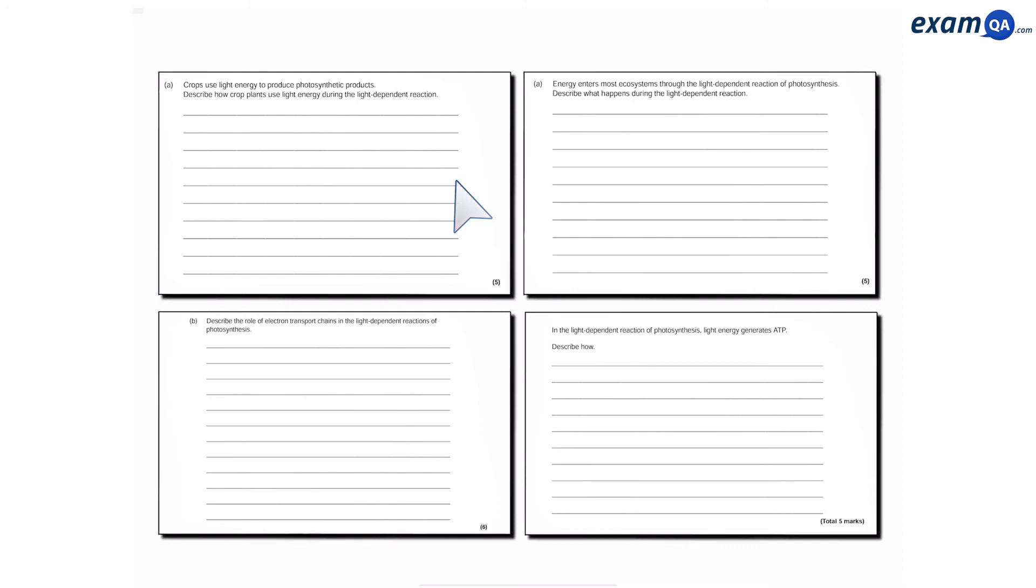Now, although they're asking the same thing, we know from biology mark schemes that even if you put down 5 points, there's always going to be one that you're going to miss out. So, I've taken these questions and summarized what you have to say if they ask you to describe the light-dependent process. So, here we go.